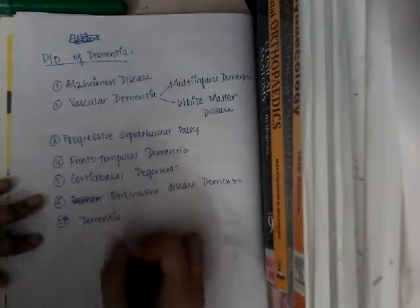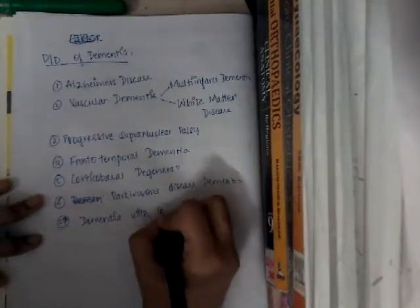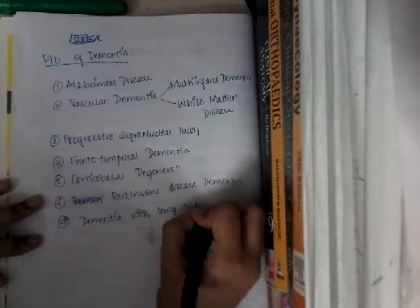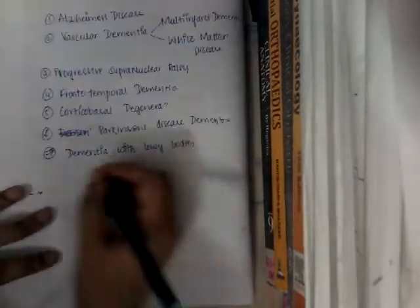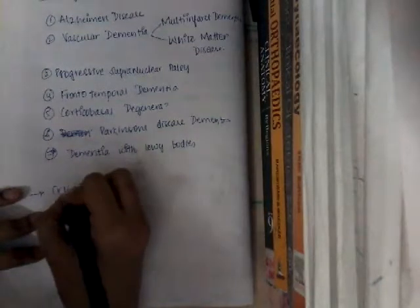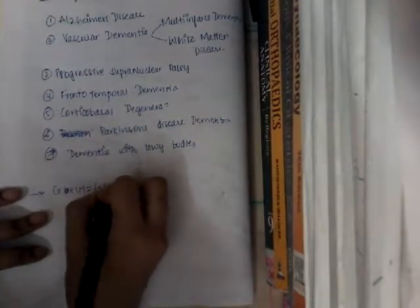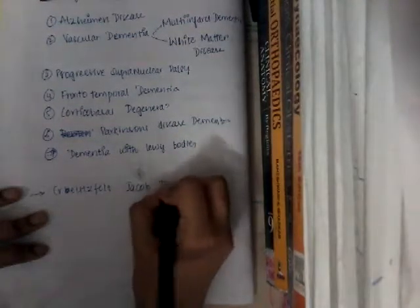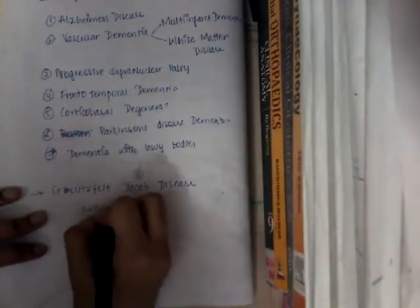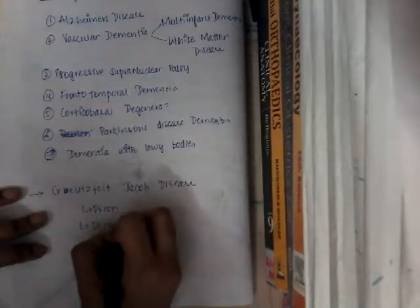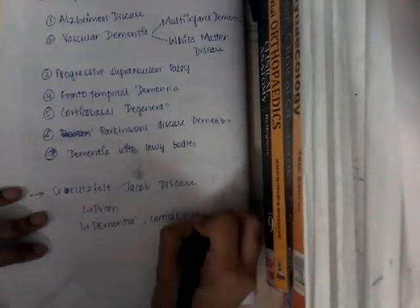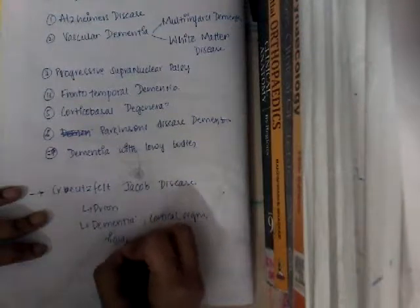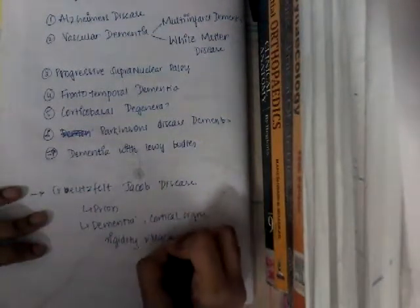So those are the differential diagnoses of dementia we covered previously. Now let us learn about new differential diagnoses of dementia. Number one is Creutzfeldt-Jakob disease. This is a prion disease where there is dementia and cortical signs, rigidity and myoclonus — these are the major features.